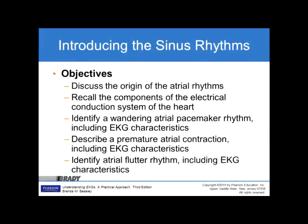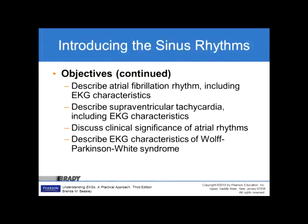Introduction to Sinus Rhythms or Atrial Rhythms. Objectives: Discuss the origin of atrial rhythms. Recall the components of the electrical conduction system of the heart. Identify a wandering atrial pacemaker rhythm, including EKG characteristics. Describe a premature atrial contraction, including EKG characteristics. Identify atrial flutter rhythm, describe atrial fibrillation rhythm, describe supraventricular tachycardia, discuss clinical significance of atrial rhythms, and describe EKG characteristics of Wolff-Parkinson-White syndrome.